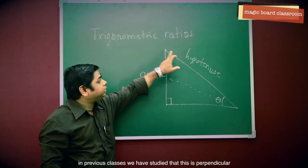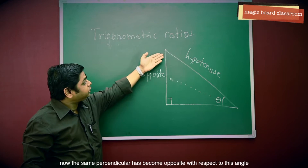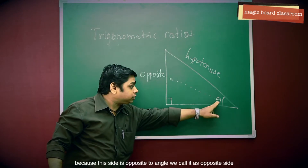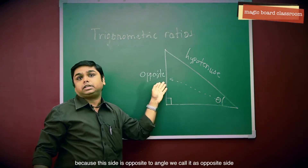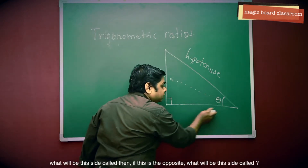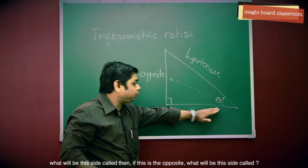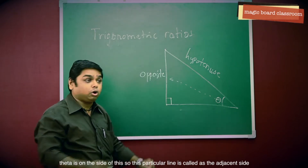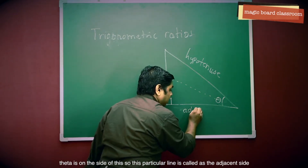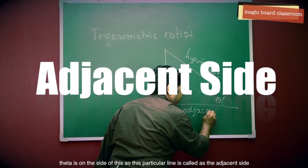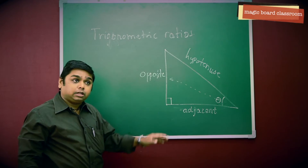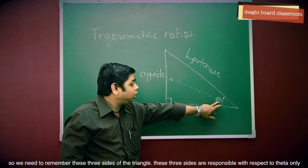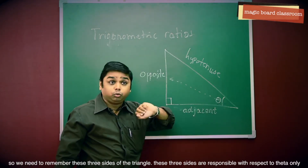In previous classes, we studied that this is the perpendicular. Now the same perpendicular has become the opposite side with respect to this angle, because this side is opposite to the angle, so we call it the opposite side. The side on which theta sits is called the adjacent side. We need to remember these three sides of the triangle — they are defined with respect to theta only.